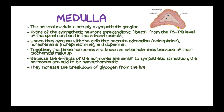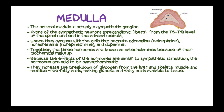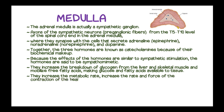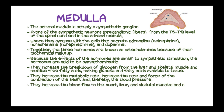Because the effects of these hormones are similar to sympathetic stimulation, they are referred to as sympathomimetic hormones. They increase the breakdown of glycogen from the liver and skeletal muscle and mobilize free fatty acids, making glucose and fatty acids available to the tissues. Therefore, they increase the metabolic rate, increase the rate and force of contraction of the heart, thereby increasing blood pressure, and increase blood flow to the heart, liver, and skeletal muscles. They also dilate the bronchi. Therefore, they are known as fight-or-flight response hormones.